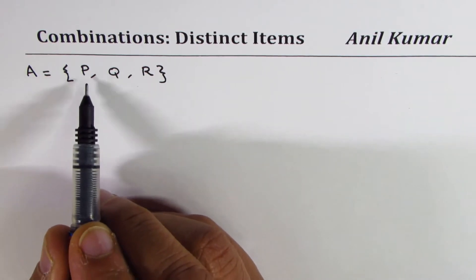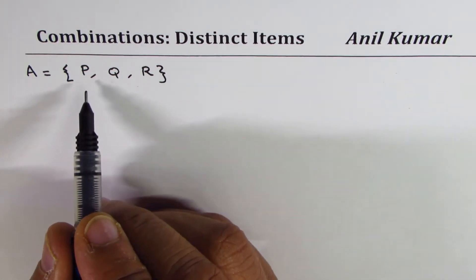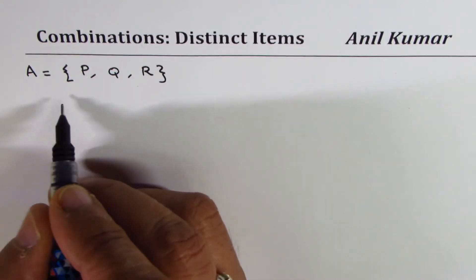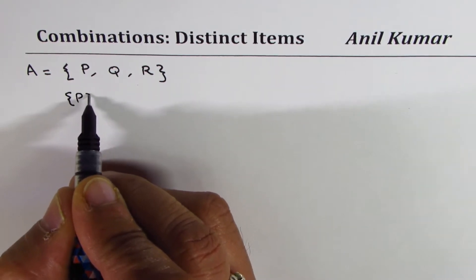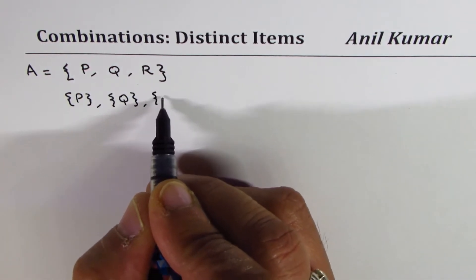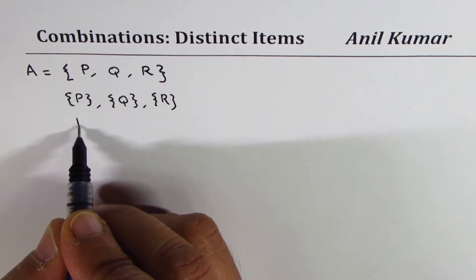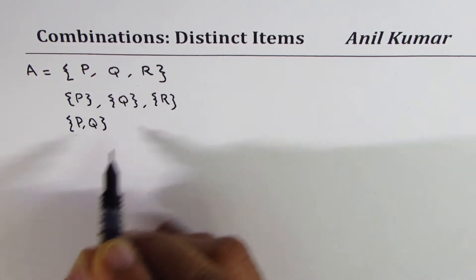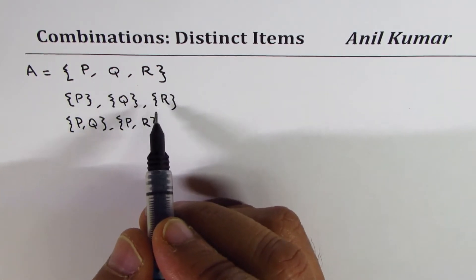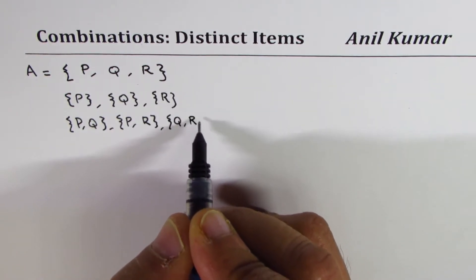Now we need to figure out how many combinations can be made out of these items. We call these items P, Q, R as distinct as you can identify them clearly. Now if I'm trying to look for their combinations, I could have a combination where I may just select one. So I could have a set which has only P or which may have just Q or which may have just R. We could make combinations of twos. We could have P with Q, P with R, and we could have Q with R.